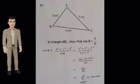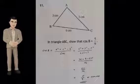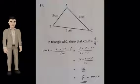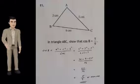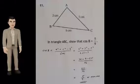In triangle ABC, show that cos B equals 5 over 9. Well, we know all three sides of the triangle, so use the cosine rule.